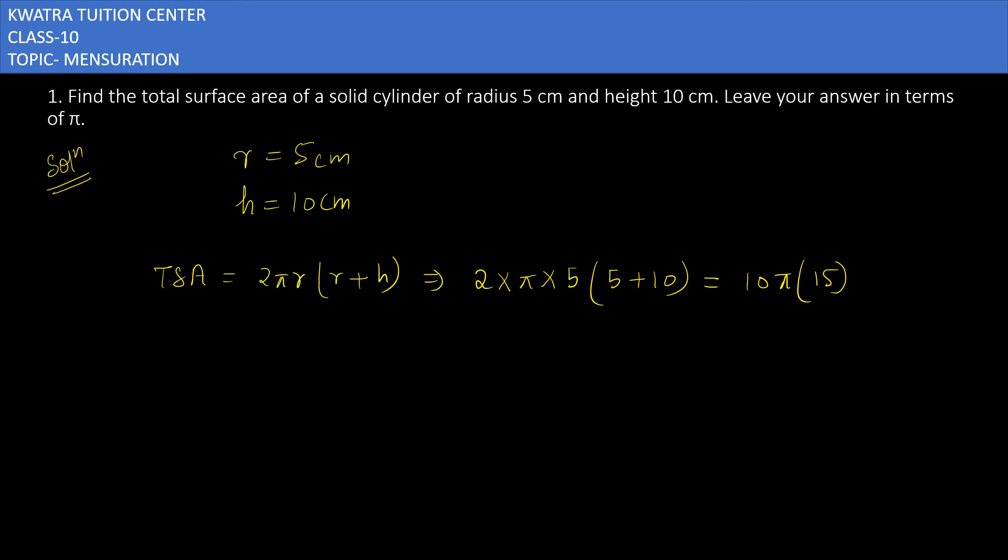Then you will get 15, so 10 into 15 is 150π. It will be in centimeter square because we are finding area, so 150π cm². This is the answer for the first one.